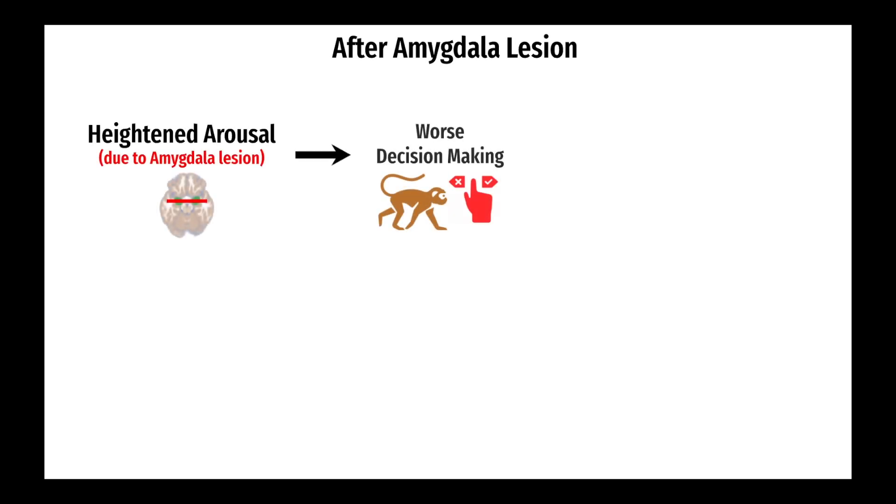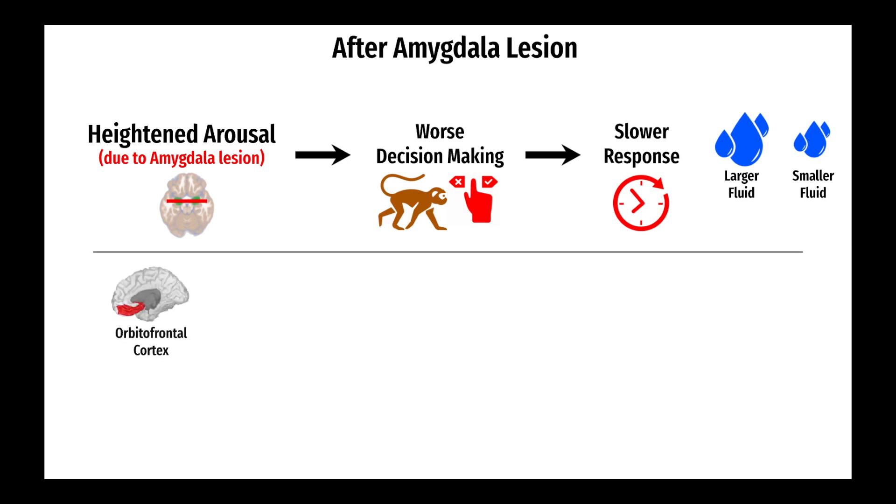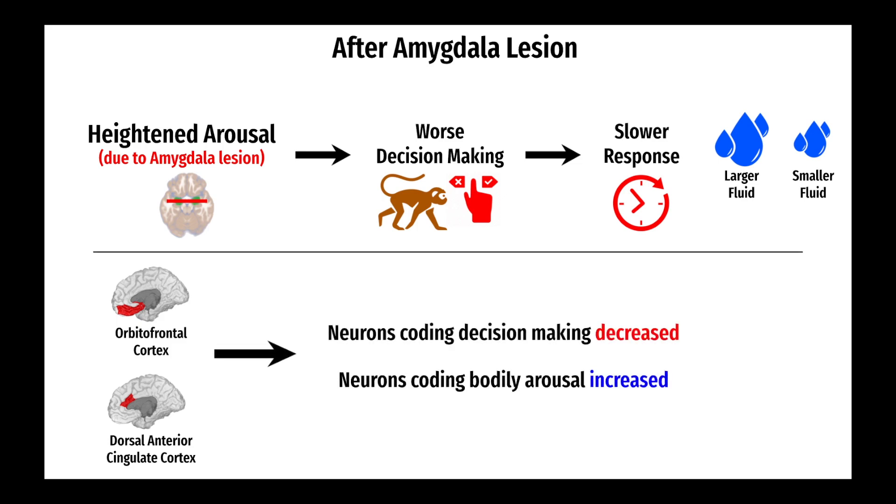The researchers found that this heightened arousal hindered decision-making in the monkeys, as the monkeys were now slower in choosing the larger fluid amount. They also found that some of the neurons in the orbital frontal cortex and dorsal anterior cingulate cortex that coded decision-making decreased, while the neurons that tracked bodily arousal increased.